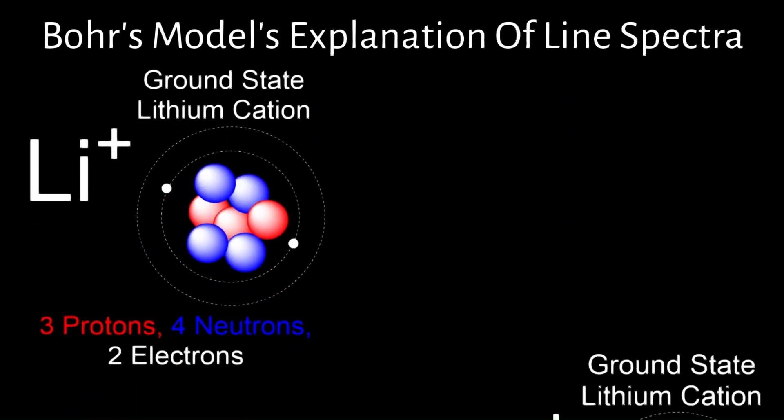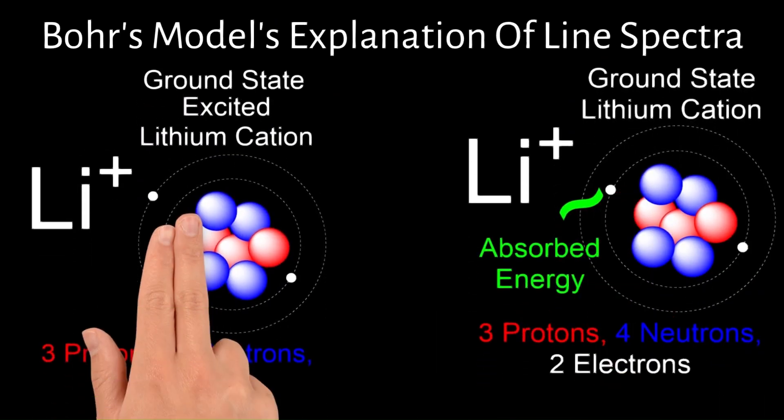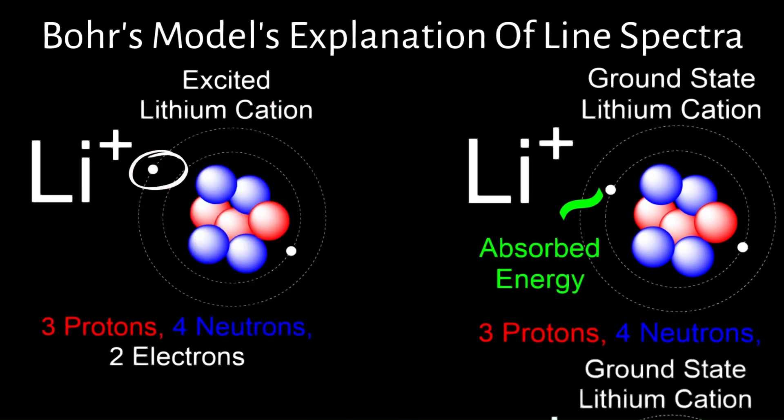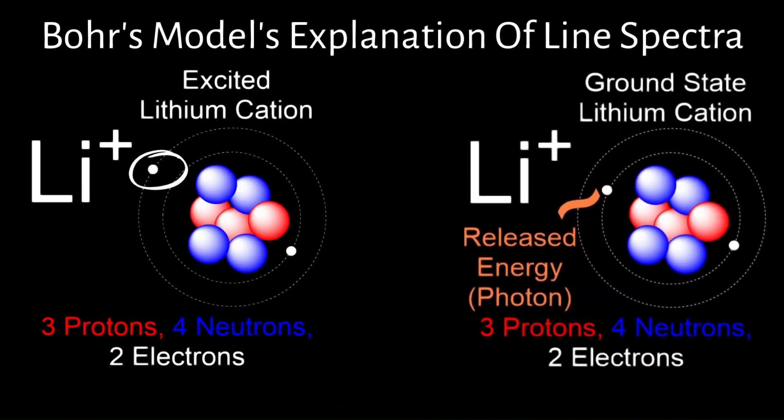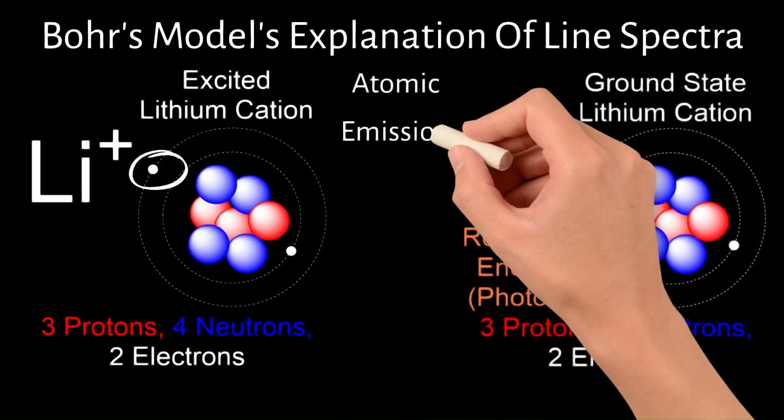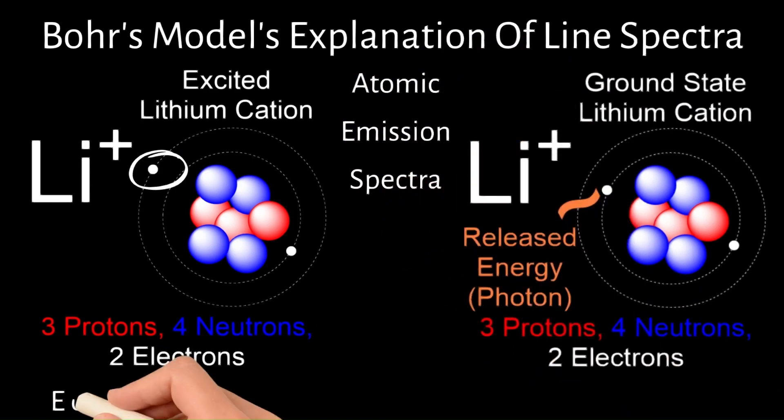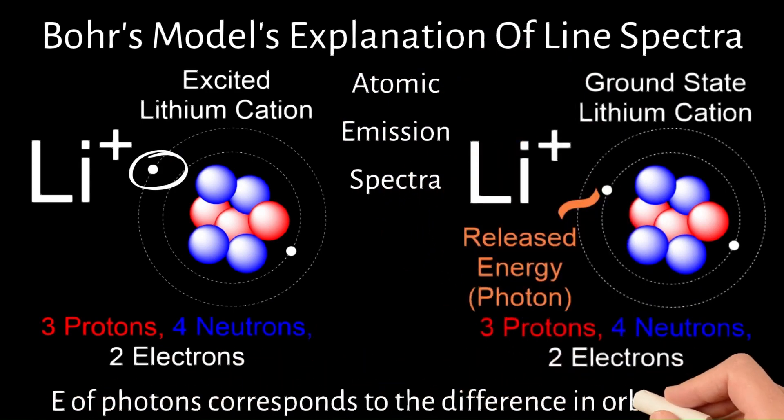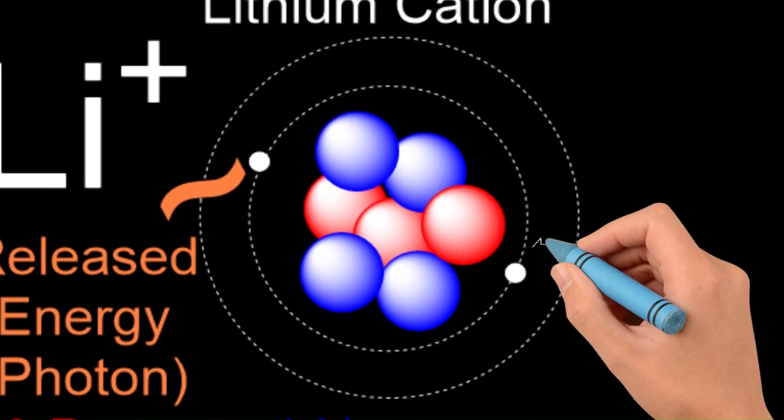When electrons are excited by absorbing energy, they jump to higher energy levels. As they return to lower energy levels, they emit photons, and this is called atomic emission spectra or fluorescence. The energy of these photons corresponds to the difference in orbit levels involved in the transition.